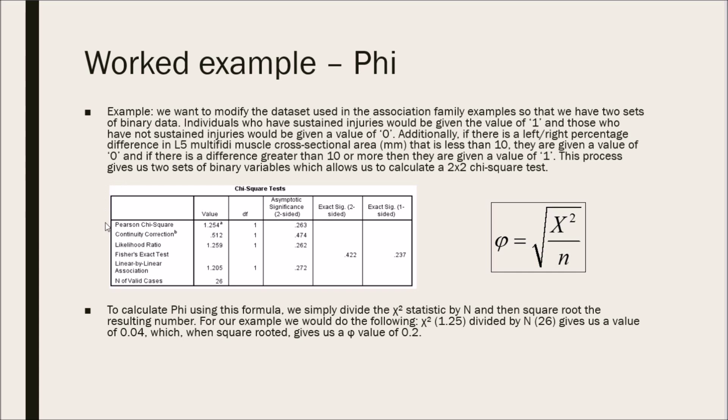I used SPSS to calculate that test and here is the output. It's not significant, but it's not necessary to have a significant result in order to create an effect size. But it's more likely that the effect size will be quite small. And here again is the formula. And to calculate Phi using this formula, we simply divide the chi-square statistic, which would be 1.254 by n, which in this dataset would be 26.